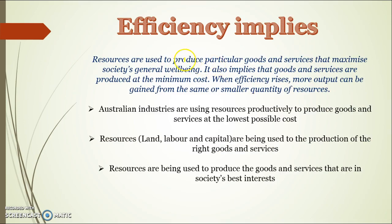Resources are used to produce particular goods and services that maximise society's wellbeing, produced at the minimum cost. Australian industries are using resources productively to produce the right goods and services — goods and services that are in society's best interests. So we're not producing things that have negative implications for society, like drugs and things like that.